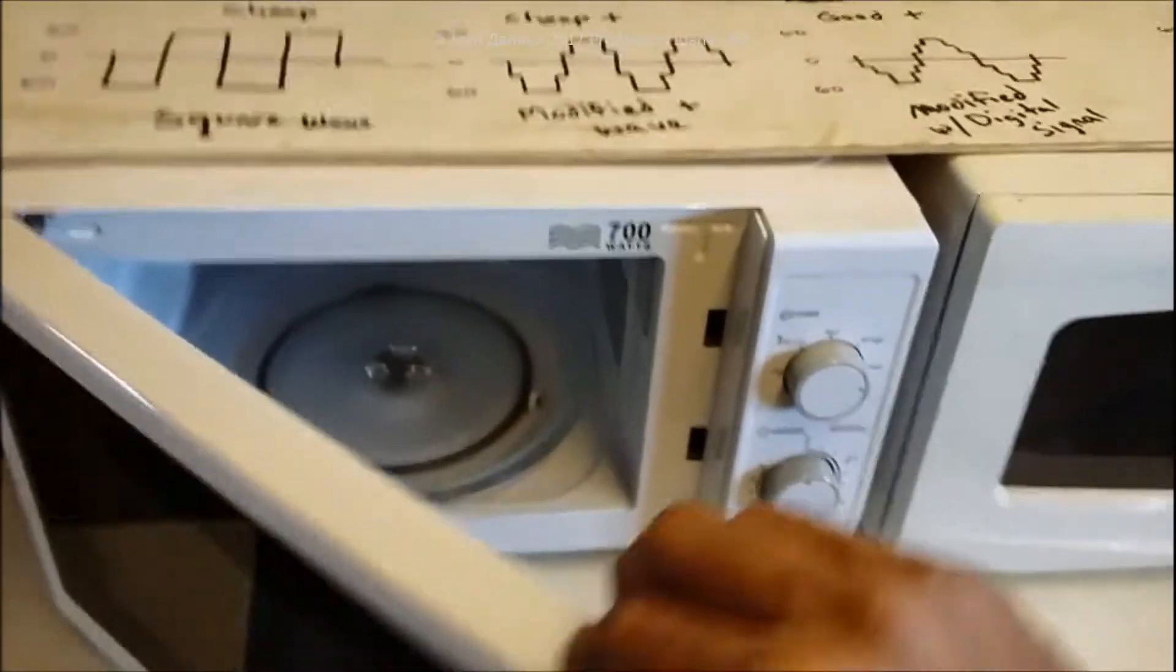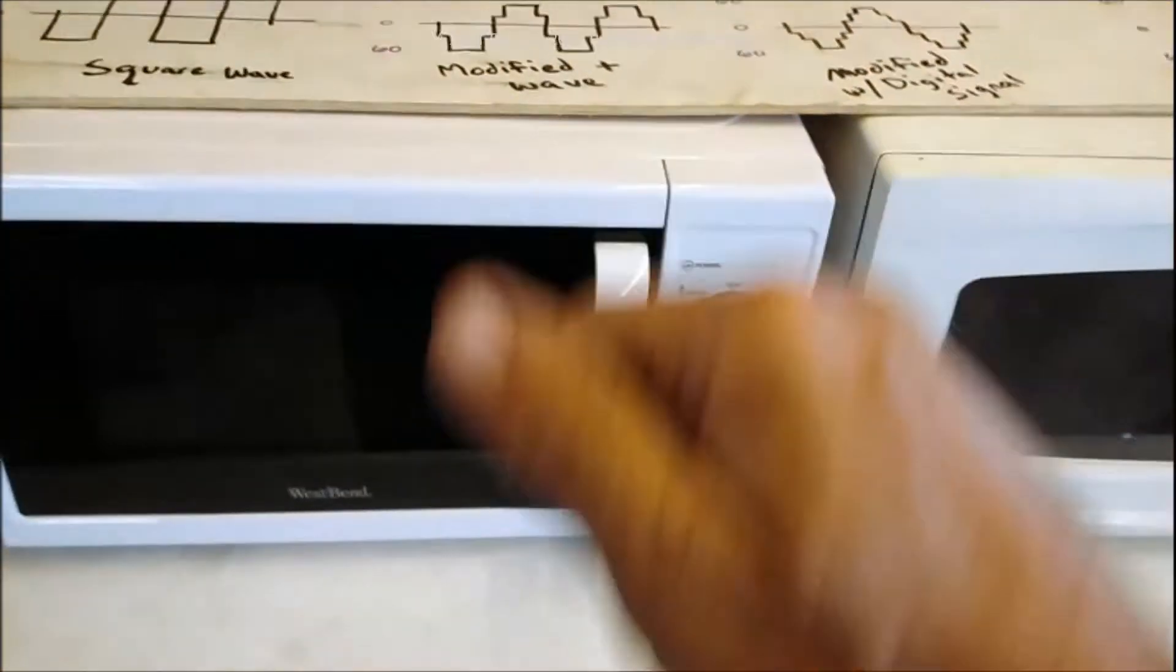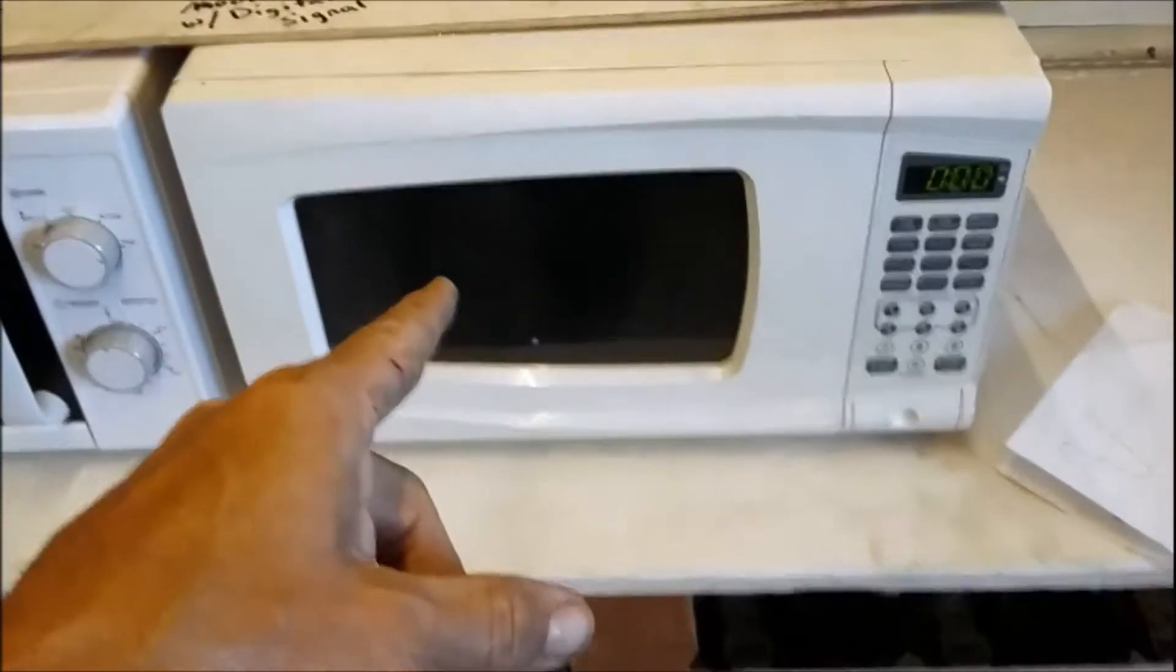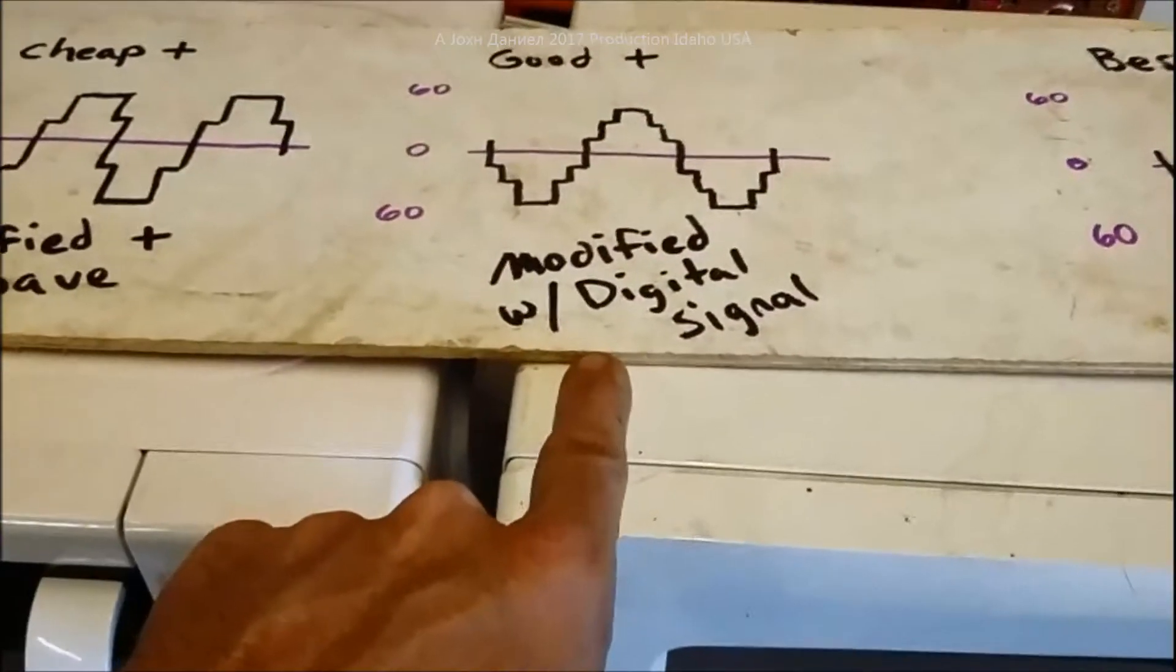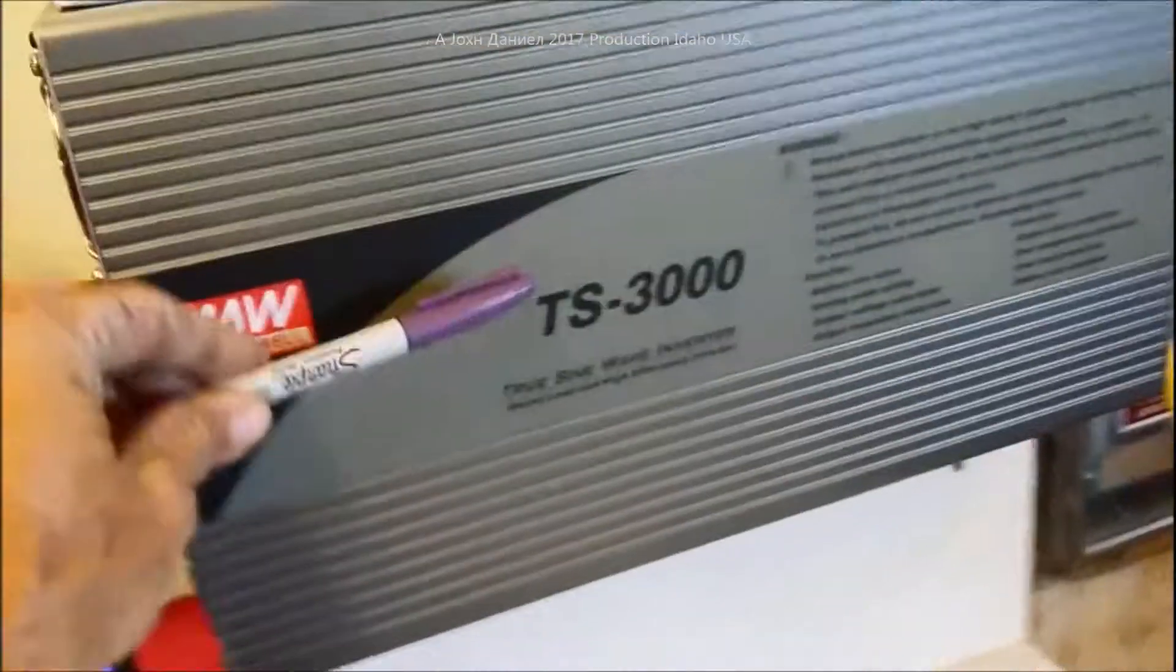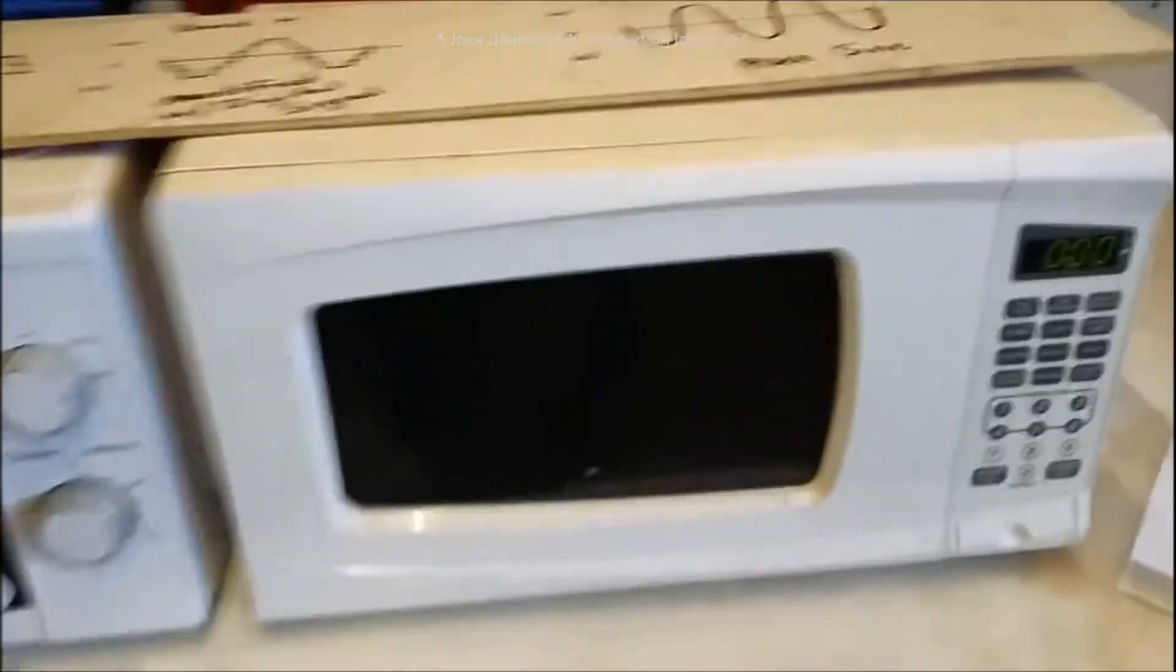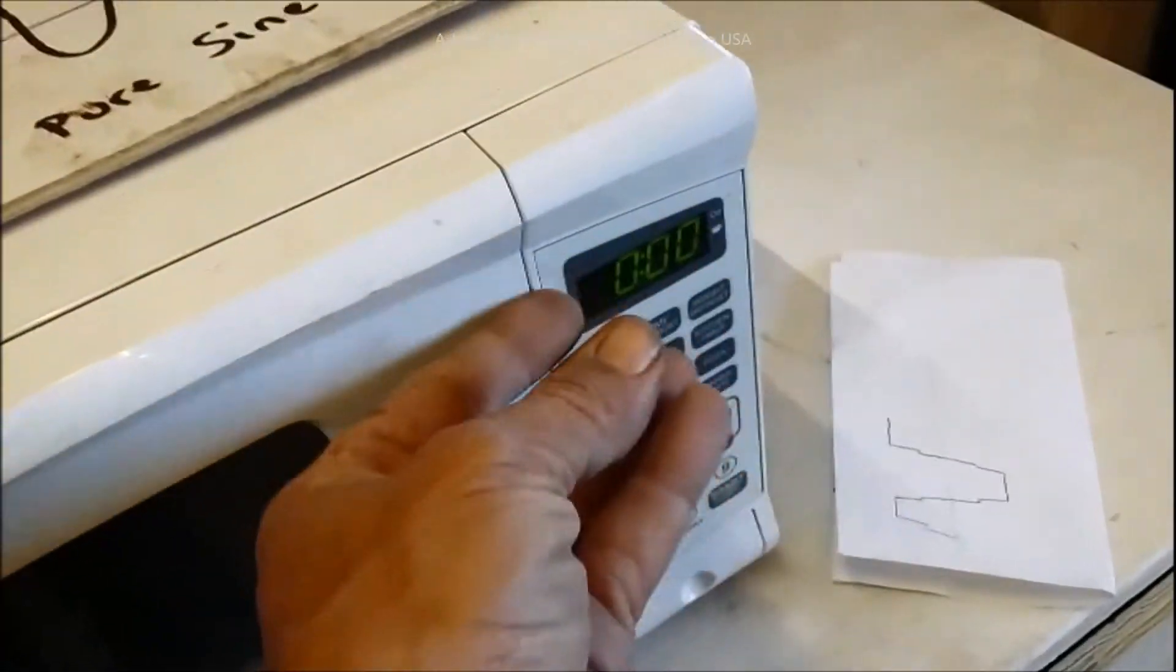What you're going to do is make sure you get at least a 2,300 like the Power Bright, there'll be a link down there for that one too, to run one of these. This over here, it will run and its clock will almost function correctly on this, it'll function perfect on this, which is what this big huge Mean Well is. The microwave here, this one can only really operate good on this one and this one because it has digital circuitry that controls all the functions.